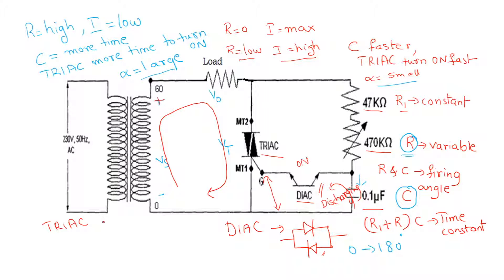If the TRIAC is on, assuming the semiconductor device to be ideal, we take Vt equals 0. So V0 will be equal to Vs.